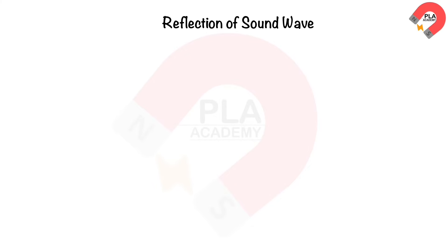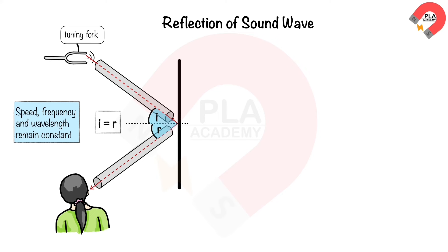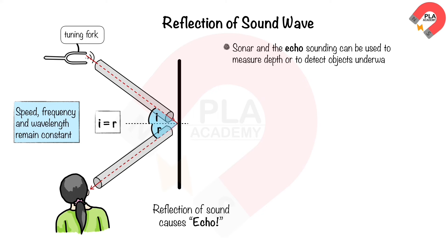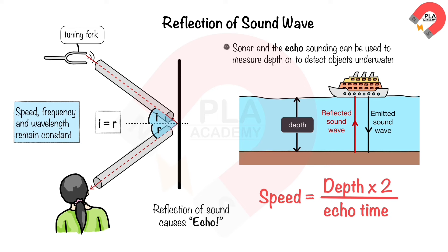Reflection of sound. Sound waves behave like other waves — when a sound wave strikes a surface it may be reflected, with the angle of incidence equal to the angle of reflection, while speed, frequency, and wavelength remain constant. The reflection of sound causes echoes. Sonar and echo sounding can measure depth or detect objects underwater — a sound wave is transmitted from the surface, reflected off the ocean floor, and the time taken for the sound to return is used to calculate depth. Speed = 2 × depth / echo time.